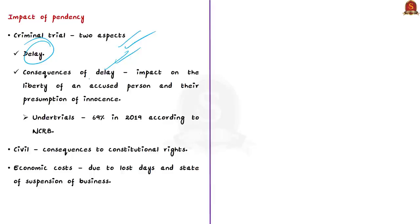However, during the pendency of a criminal trial, the liberty of the accused is restricted, and the presumption of innocence has a substantive impact, especially if they are put in prison during the trial period. The percentage of under-trials in Indian prisons has increased — from 67% in 2015 to 69% in 2019, according to Prison Statistics India 2019 released by the National Crime Records Bureau. On the civil side, there are also consequences to constitutional rights.